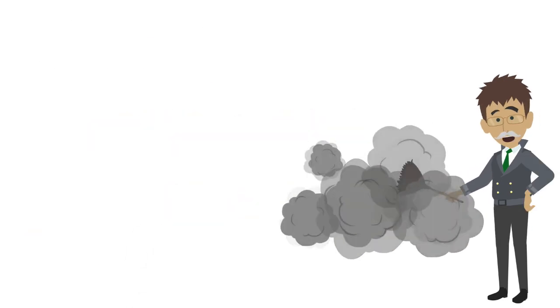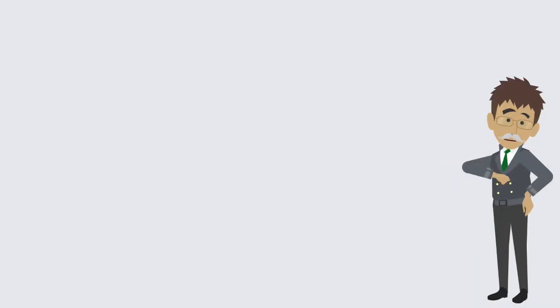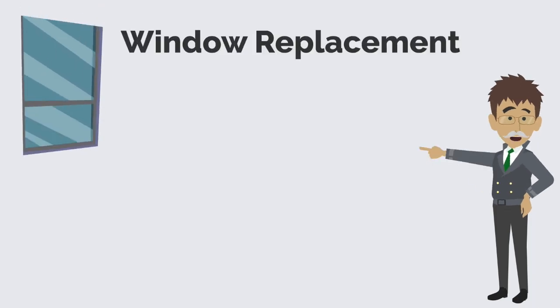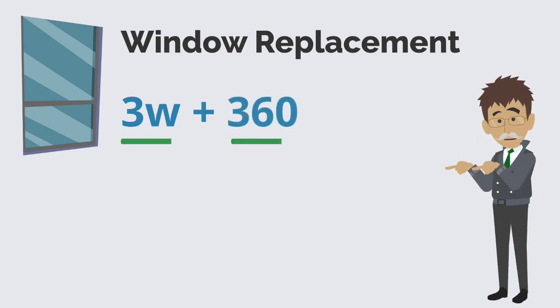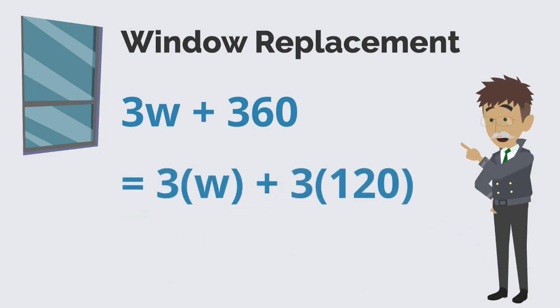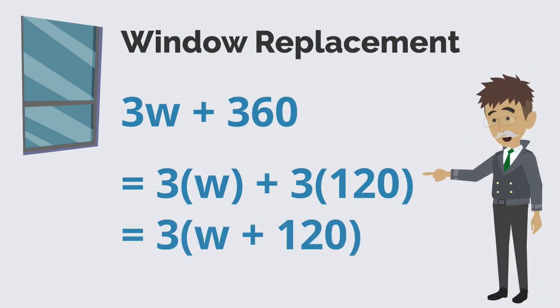Because the distributive property states the two expressions are the same, you can also reverse the process. For example, an expression representing the cost to replace the windows in the room is 3W plus 360. The term 3W represents the cost of three identical windows, and 360 is the installation cost. Notice that both terms, 3W and 360, are divisible by three. I can factor it out of both terms. Then, I can apply the distributive property. The factored expression reflects that each window has a variable cost, W, and a fixed installation cost of $120.